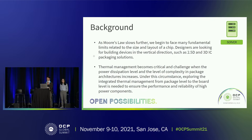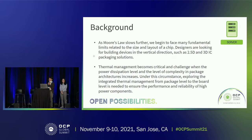The first point is a slowdown — we begin to face many fundamental limits related to the size and the layer of a chip. Designers are looking at building devices in the vertical direction, such as 2.5D and 3D IC packaging solutions. As you can see, when we have 2.5D and 3D, thermal can be a problem. This leads to the second point: thermal management becomes critical and challenging when the power dissipation level and complexity in packaging architectures increase.